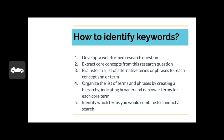Step two: extract core concepts from this research question. Step three: brainstorm a list of alternative terms or phrases for each concept or term. Step four: organize the list of terms and phrases by creating a hierarchy, indicating broader and narrower terms for each core term. Step five: identify which terms you would combine to conduct the search.